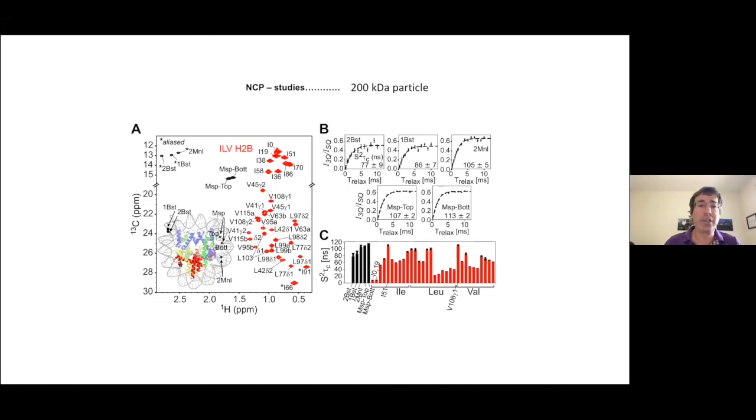And an example of this in the context of a 200 kilodalton particle or so, this is the nucleosome core particle where we've labeled ILVs, one of the proteinaceous components of this nucleoprotein complex. NCPs are comprised of four copies, or actually two copies each of four different histones, H2A, H2B, H3, and H4. We've labeled H2B with the ILV methyl labeling approach. And then we have something like five different sites on the DNA, which we've labeled with C13H3.